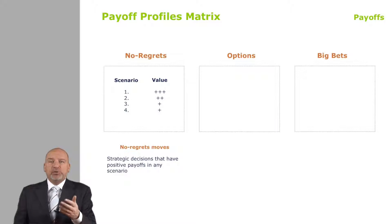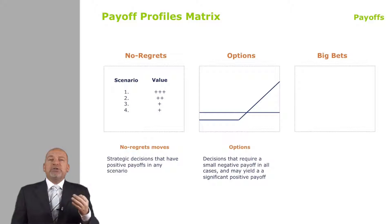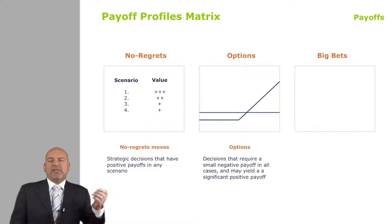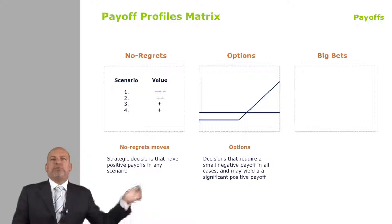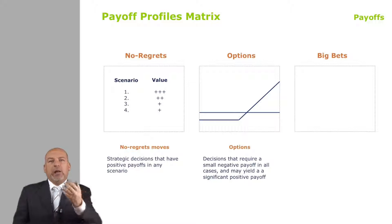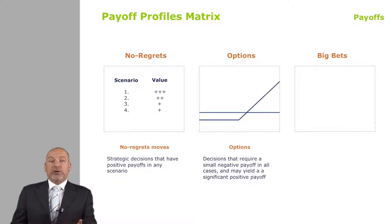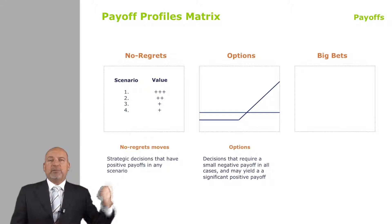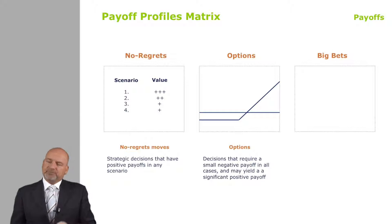The second category are options. Options are typically bets where you need to spend a little bit, and in most instances that spend is gone, and in a few it will really pay big. A classic example here would be the lottery: you buy the ticket, most of the time you just throw it in the bin, and every so often you get something back in return.